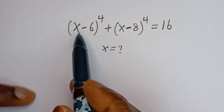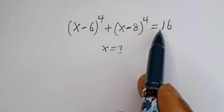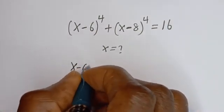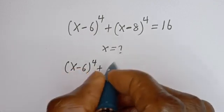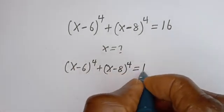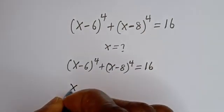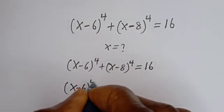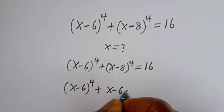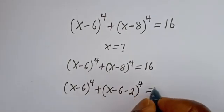Hello. How to solve for x in this equation: (x minus 6) to the power of 4 plus (x minus 8) to the power of 4 is equal to 16. We have (x minus 6) to the power of 4 plus (x minus 8) to the power of 4, and (x minus 8) can be written as (x minus 6 minus 2) to the power of 4, equal to 16.